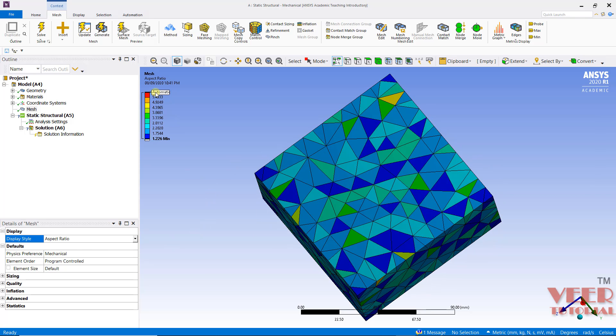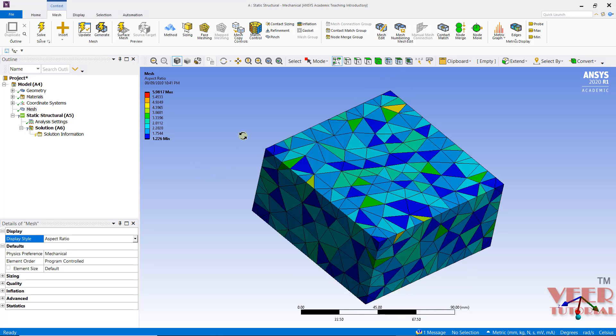Similarly we can see with respect to aspect ratio. So this is the maximum value of aspect ratio with this red color and this is the minimum value. Similarly, we can also change with respect to all these parameters.